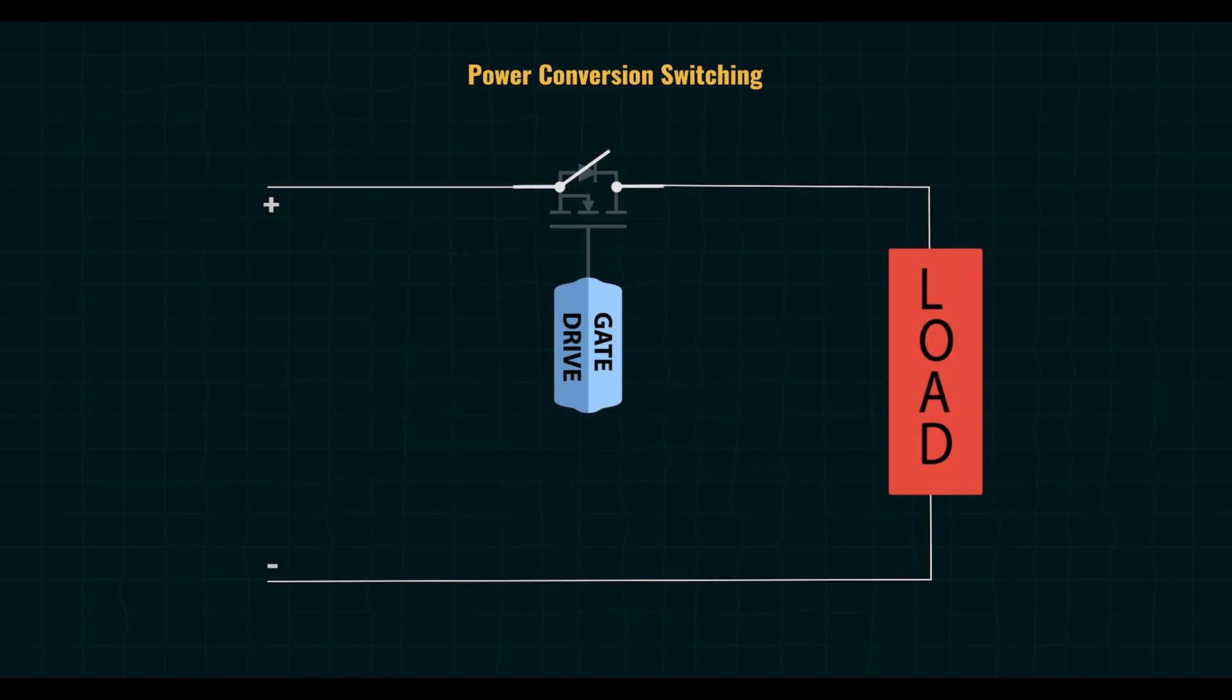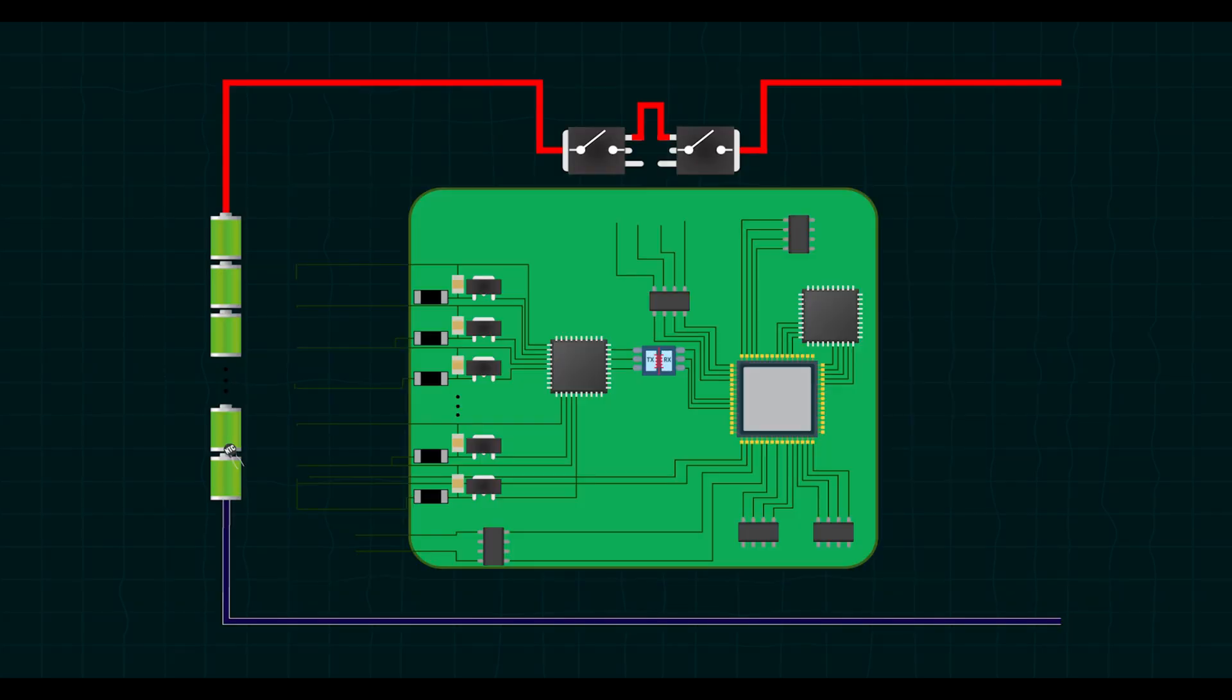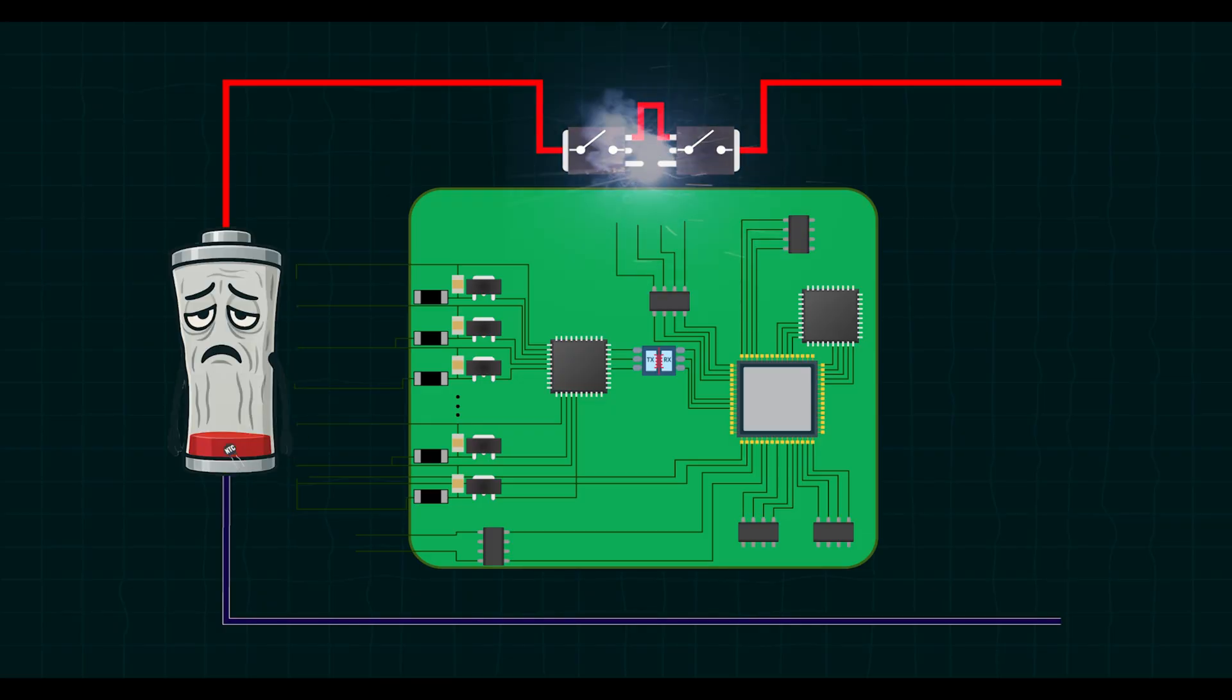And second is load switching. Here the MOSFET switching is not that rapid, usually for turning loads on or off. So it needs low resistance, but not necessarily ultra-fast switching. For battery management systems, we primarily use load switching. Here's why: switching in BMS occurs less frequently, mostly during protection scenarios like overcharge or short circuit events.